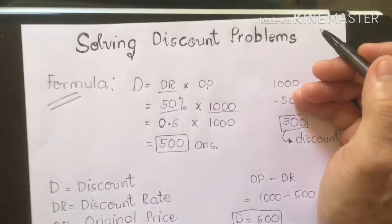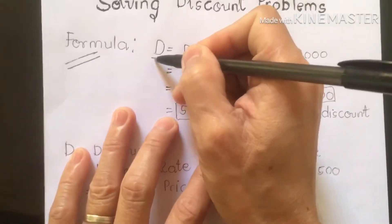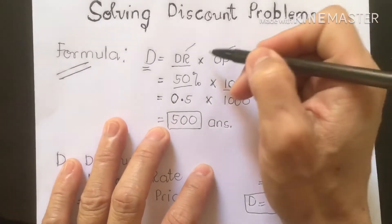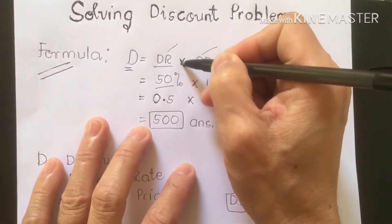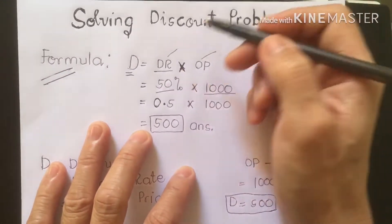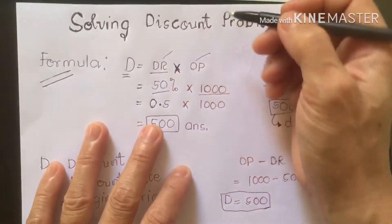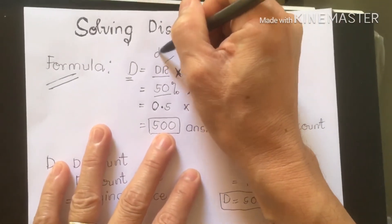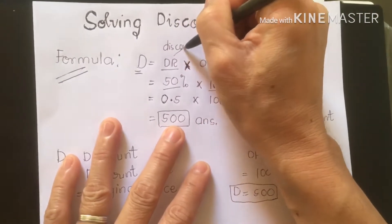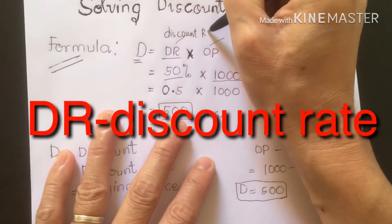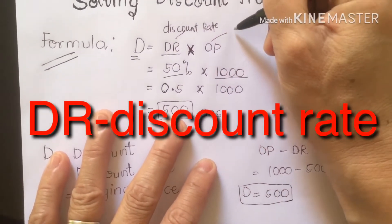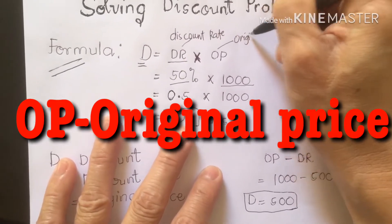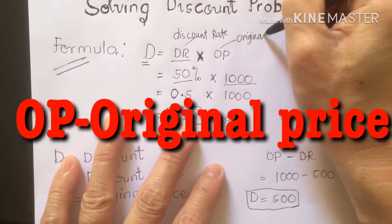What is the formula? D is equal to DR times OP. We are going to multiply to get the discount. DR means discount rate, and OP means original price.